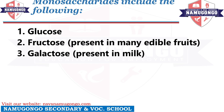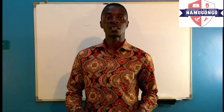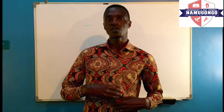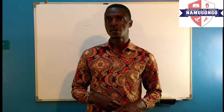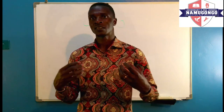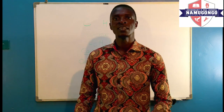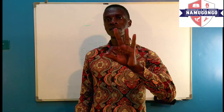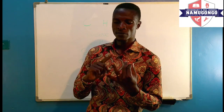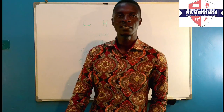We also have another type of monosaccharide called galactose. Galactose is that sugar normally present in milk — the milk we get from cows already contains some sugar, so even if you don't add sugar, it's already there. The milk that babies get when breastfeeding also contains sugar, and that sugar is called galactose. So monosaccharides are basically three: glucose, fructose, and galactose. Those are the only simple sugars we have.